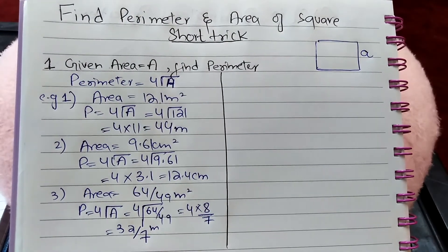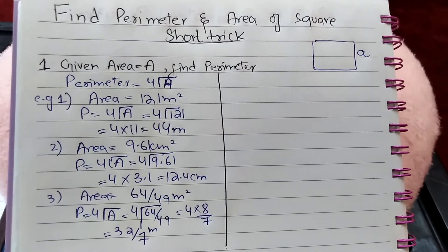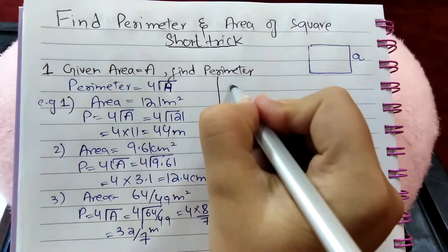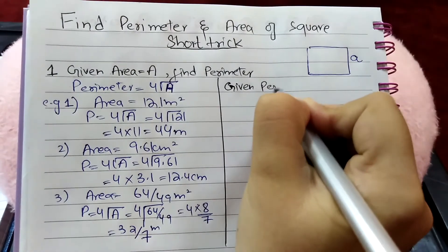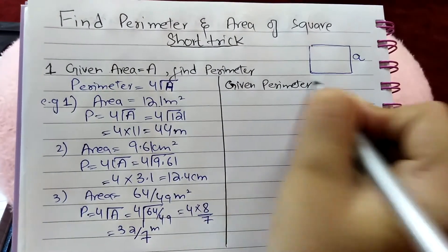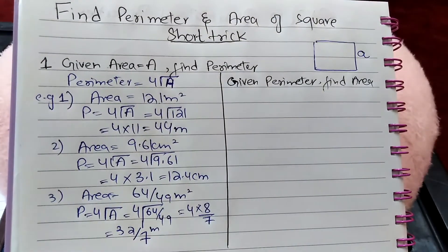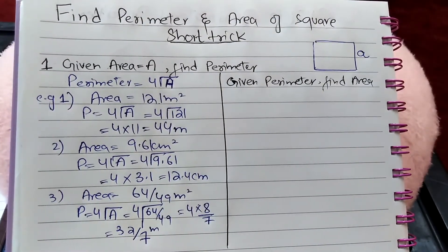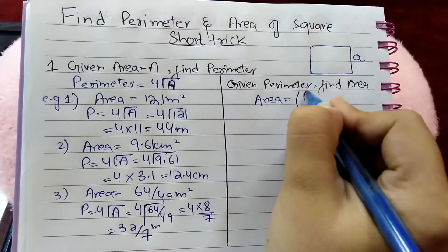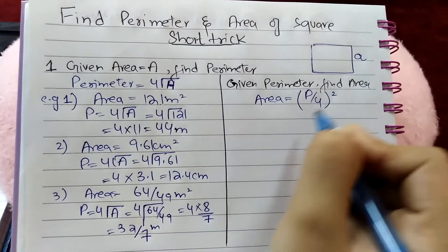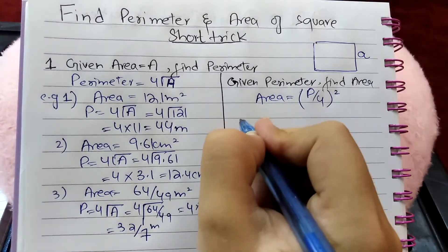Part two of this lecture is: if perimeter is given, how to find area. Given perimeter, find area. The short trick for this is: area is given as (P divided by 4) whole squared.